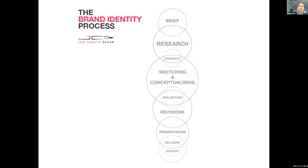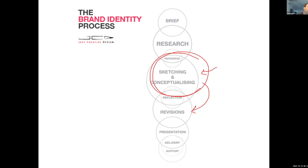Our Venn diagram shows that the bulk of our work is in that sketching and conceptualization phase — that's the big part. Revisions are also important. We work at sketching and conceptualizing for quite a while, then move into revisions: we tweak it, change it, make it a little bit better, and then jump into the presentation phase.